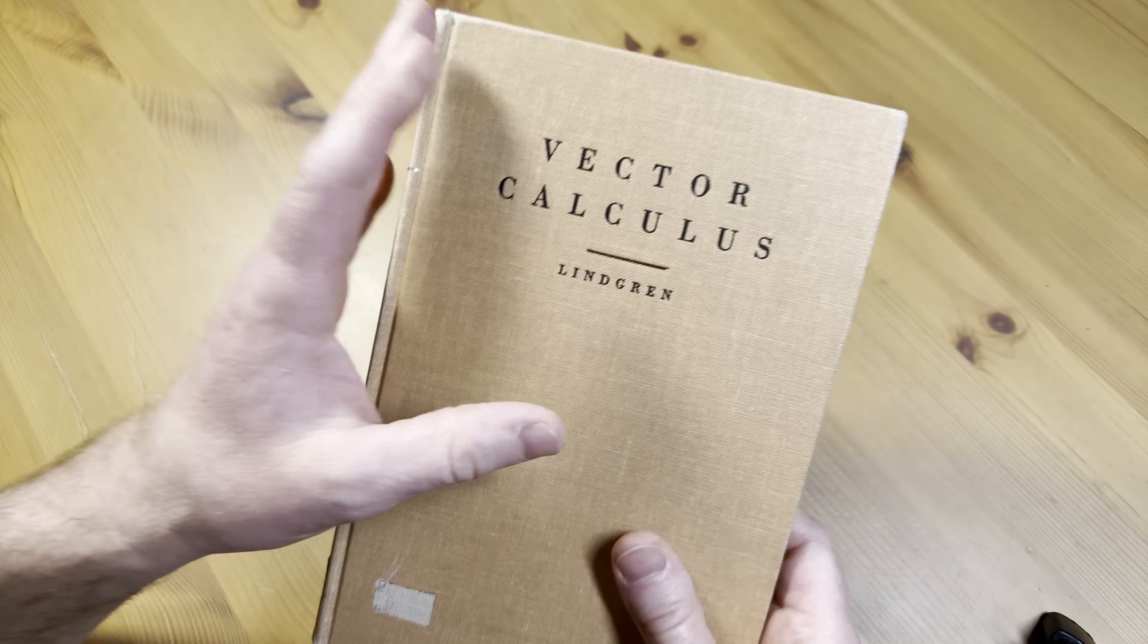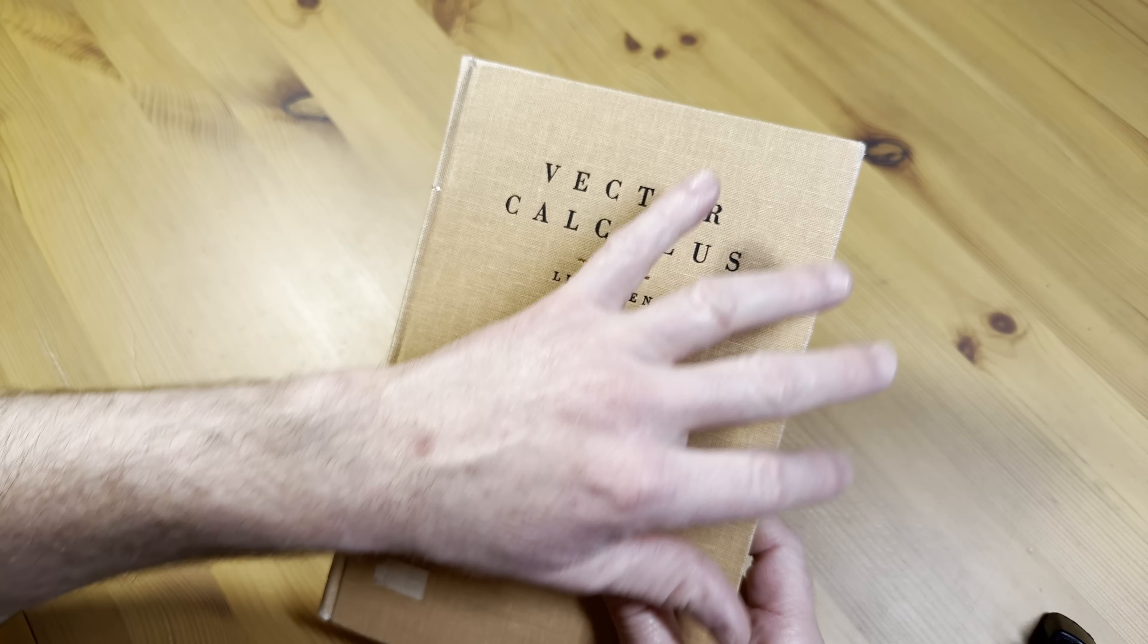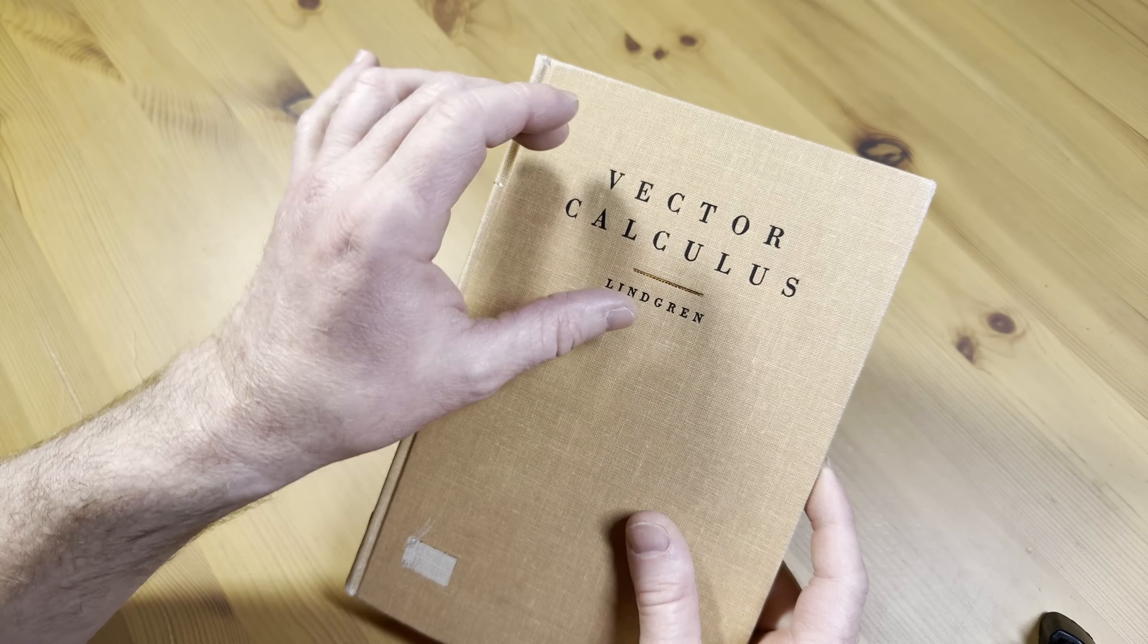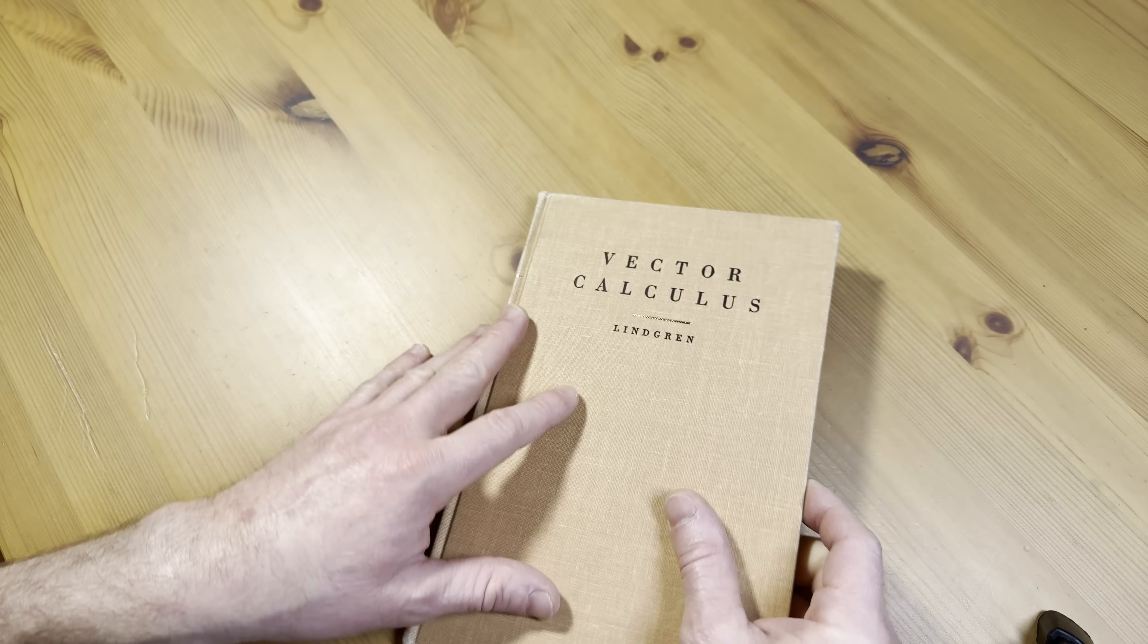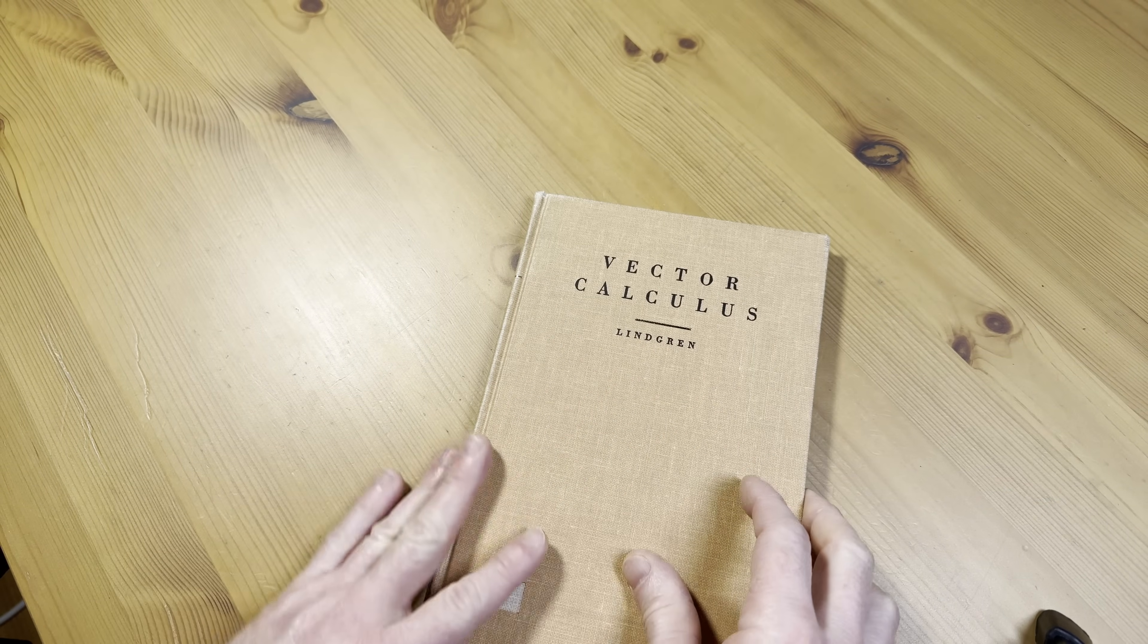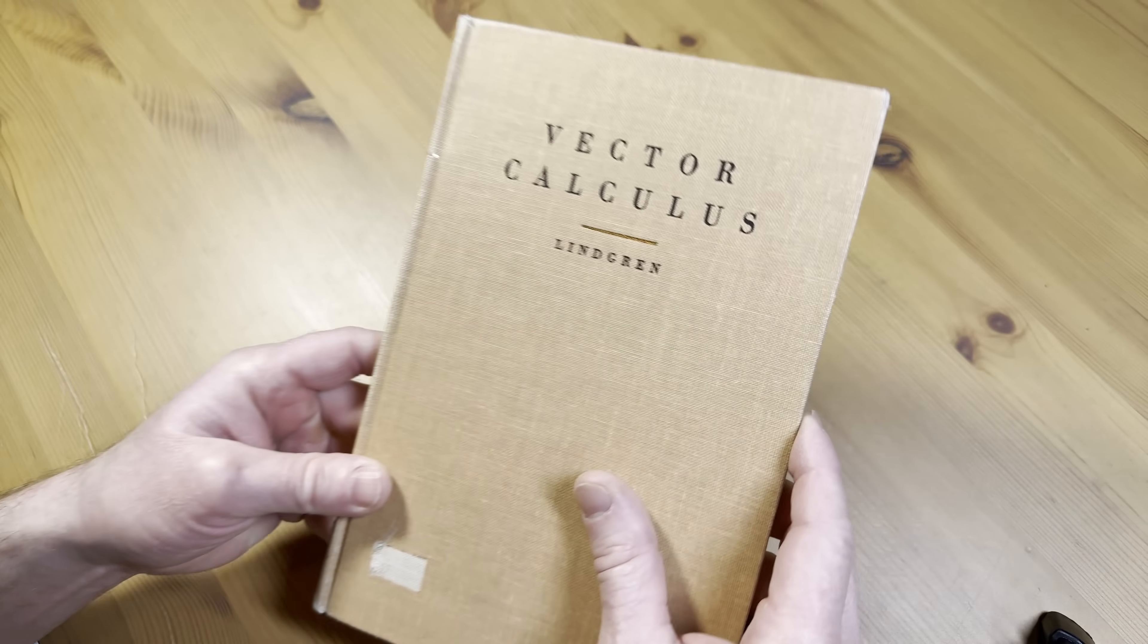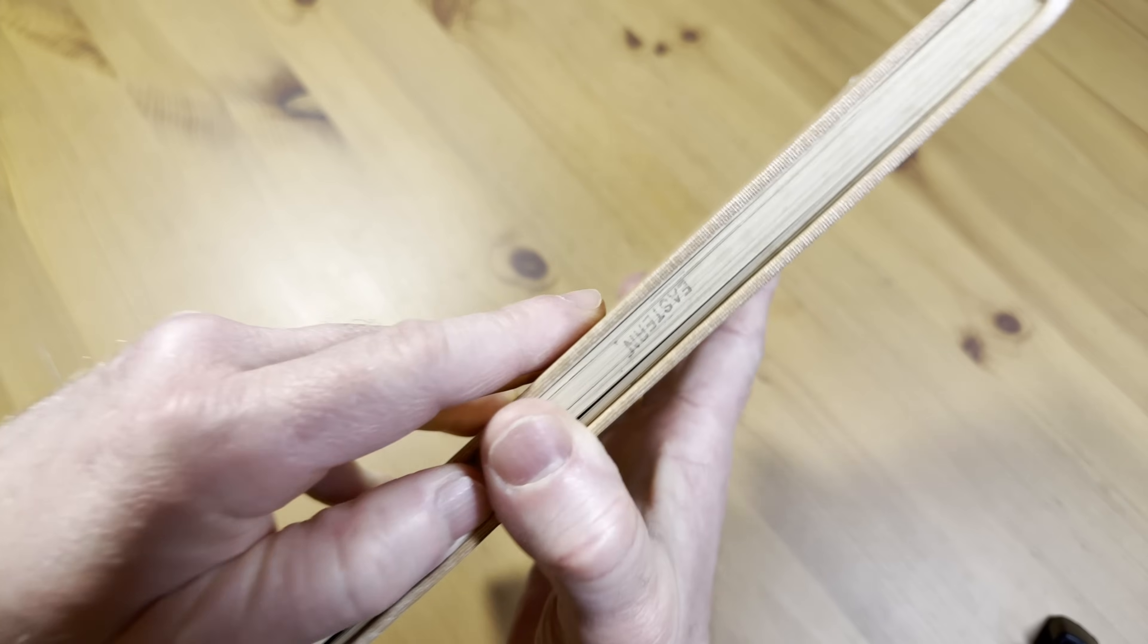There aren't that many books on vector calculus and this one is one of the first ones because it's older. A lot of other books with similar names from the past had more physics than actual math, and this book addresses that. In this video we're going to take a look at this book and see what it contains. You can see it's a very thin book.